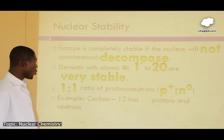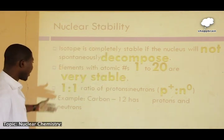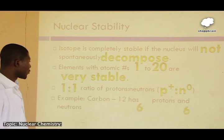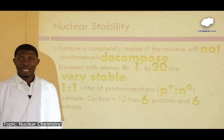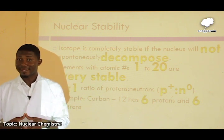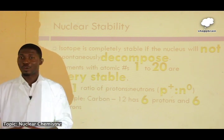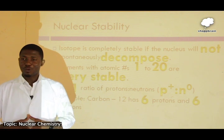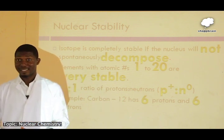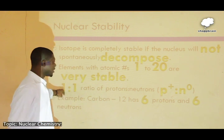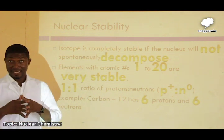A 1:1 ratio of proton to neutron is associated with stability. For example, Carbon-12 has a proton number of 6 and a neutron number of 6 (mass number 12 minus atomic number 6 = 6). So the proton-to-neutron ratio is 6/6 = 1:1. Species or elements that give a ratio of 1:1 are mostly stable.